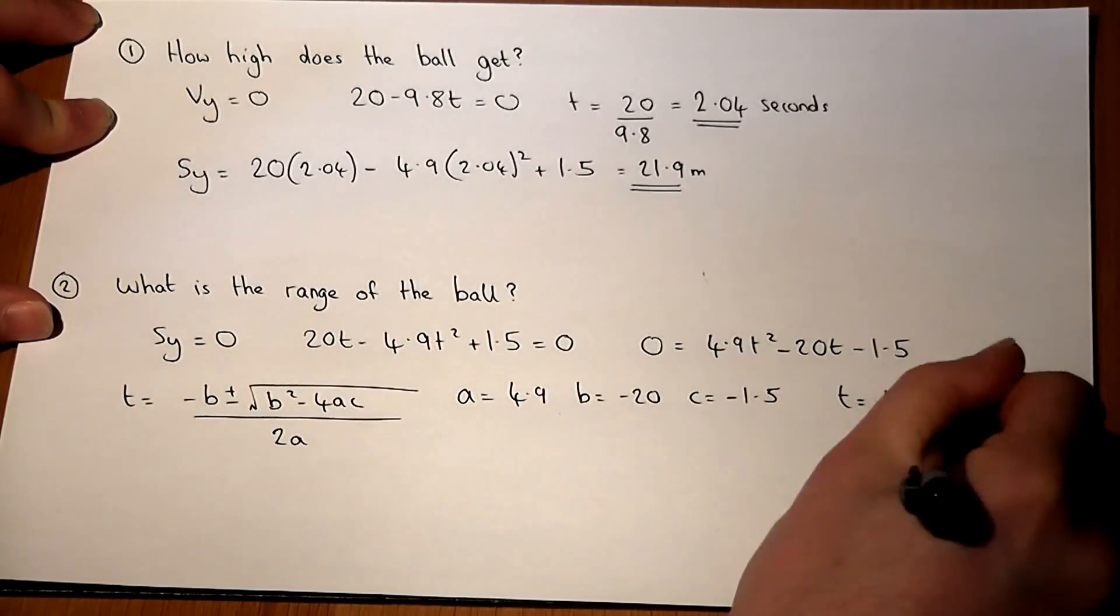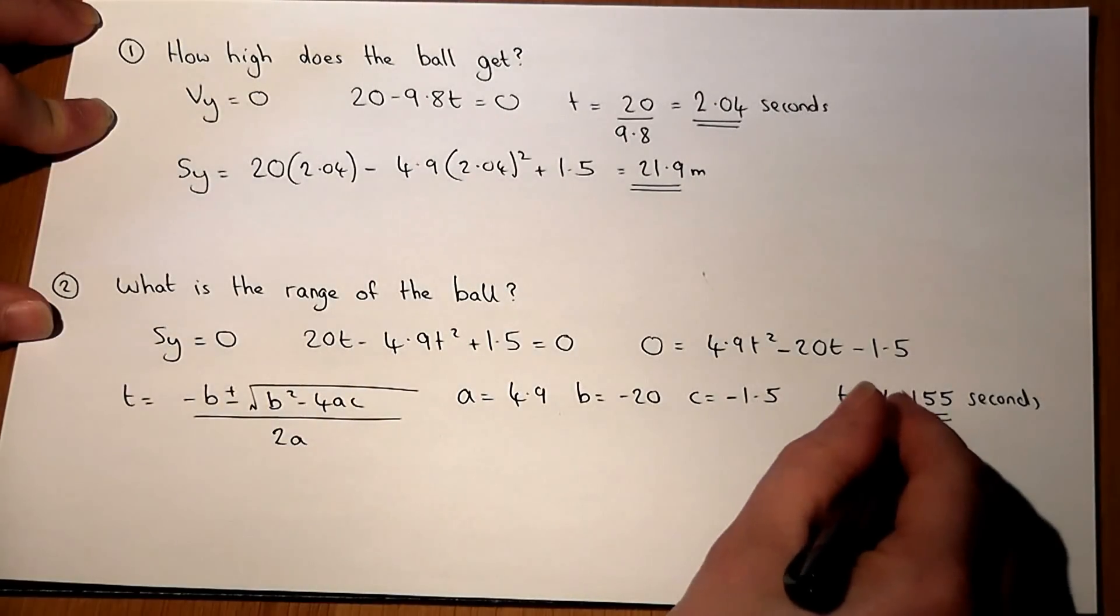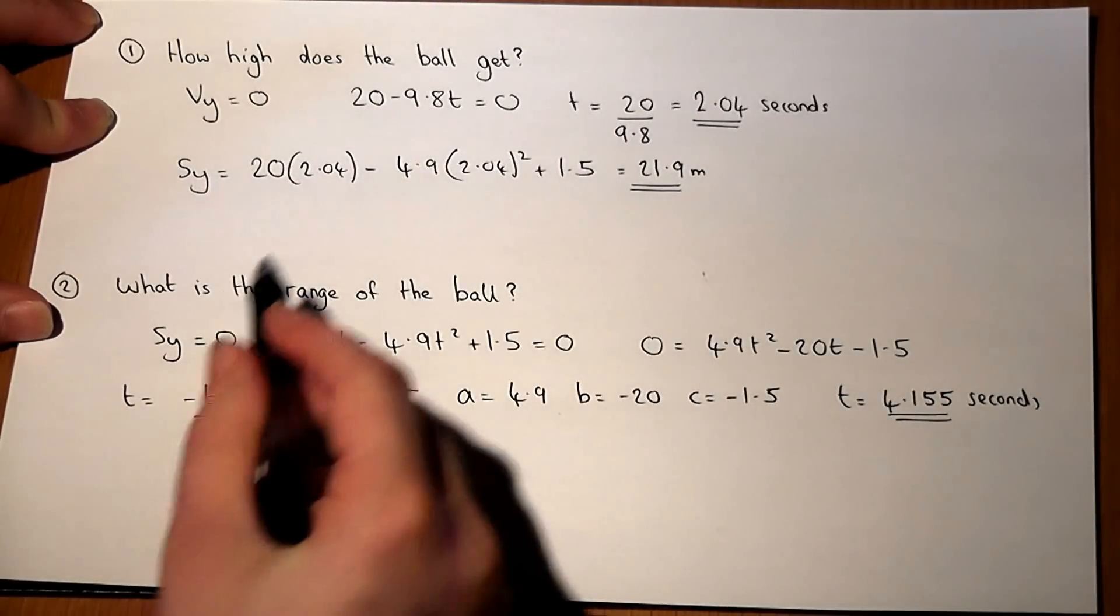You get two solutions actually. You get the negative time which is meaningless, and the positive time, 4.155 seconds, which is when the ball lands.